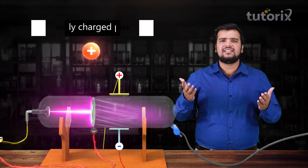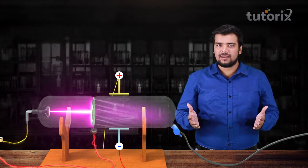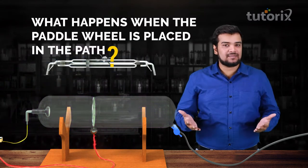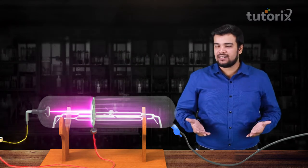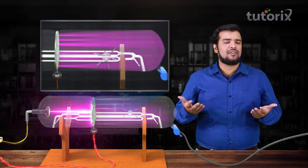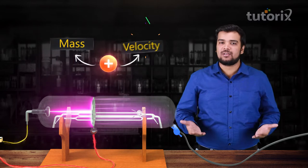Now, since these anode rays are probably made of particles, let's see what happened when they placed the paddle wheel in their path. As expected, the paddle wheel started spinning, suggesting that these anode rays are made of particles which have mass and velocity.